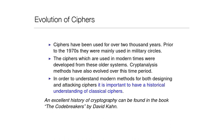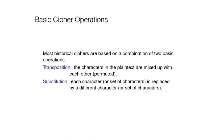Even in historical times and in the modern world, we have only two basic cipher operations. The first is transposition, where characters in the plaintext are mixed up using permutation principles. The second is substitution, where each character or set of characters is replaced by different characters.